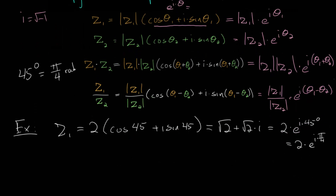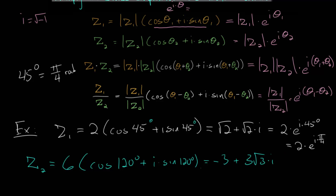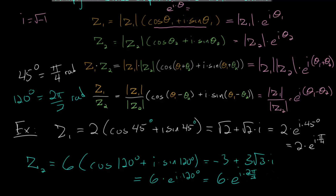Our second complex number Z2 is 6 multiplied by the cosine of 120 degrees plus I times sine of 120 degrees. In rectangular form this equals minus 3 plus 3 root 3 times I. In exponential form this is 6 multiplied by E to the I times 120 degrees. Converting to radians — knowing that 2 pi radians is 360 degrees — 120 degrees becomes 2 pi over 3 radians. So in exponential form with radians, this is 6 times E to the I times 2 pi over 3.